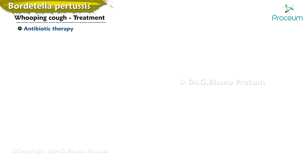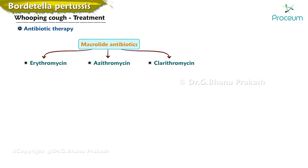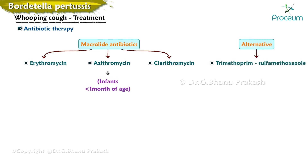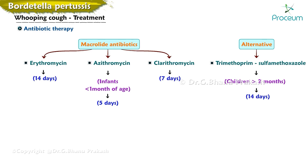Macrolide antibiotics — erythromycin, azithromycin, and clarithromycin — are the preferred antimicrobial therapies for pertussis. Azithromycin is recommended for infants younger than one month. Trimethoprim-sulfamethoxazole is an alternative for children older than two months who have a contraindication to macrolides or are infected with a macrolide-resistant strain. Recommended durations are: azithromycin for 5 days, erythromycin for 14 days, clarithromycin for 7 days, and trimethoprim-sulfamethoxazole for 14 days.